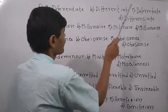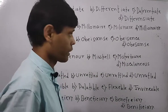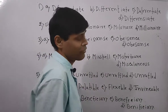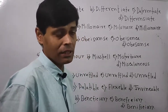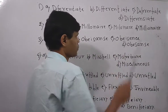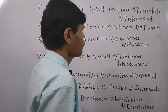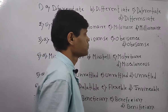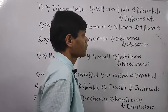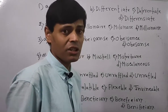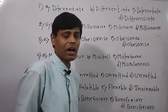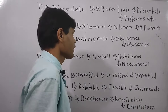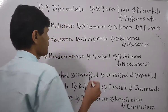The second option says 'differentiate' — it looks okay. The third option says a version we never say; we say 'differentiate,' so that is wrong. And in the last option, the spelling ends in S-I-A-T instead of T-I-A-T. So the rightly spelled word is in option B — that is 'differentiate.'